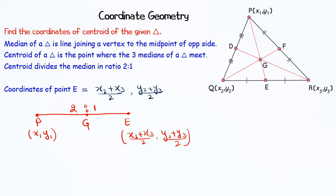Applying this, the x-coordinate of point G is: 2 times (x₂ + x₃)/2 plus 1 times x₁, all divided by 2 + 1.